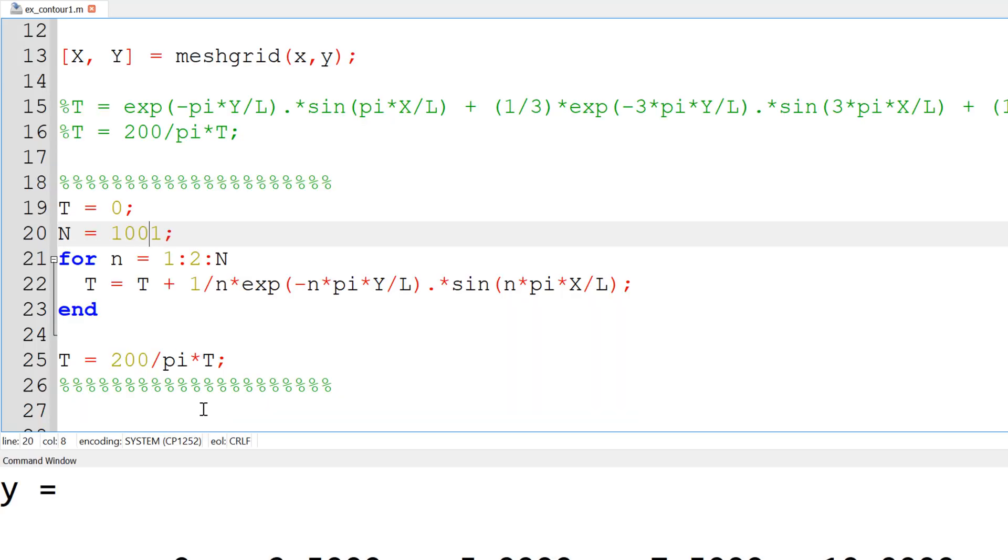Now if you want it to have really smooth, you can increase really large number to thousand and one.